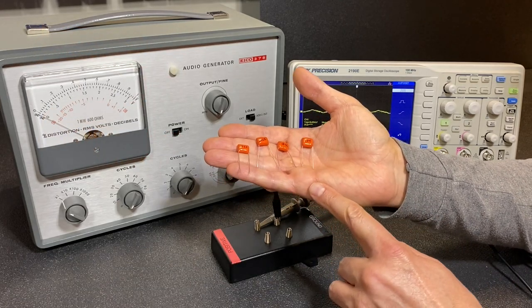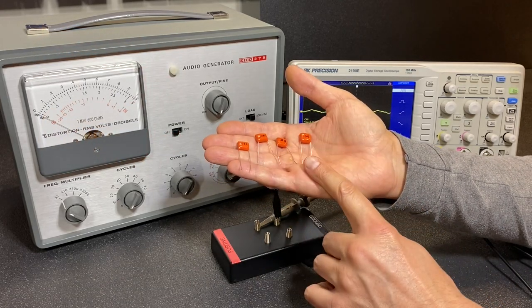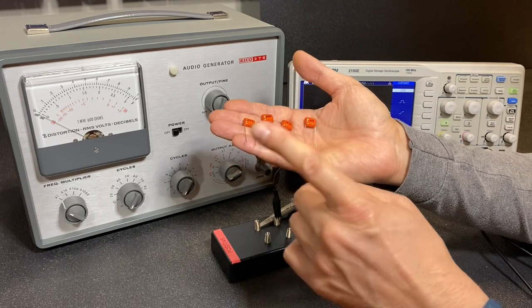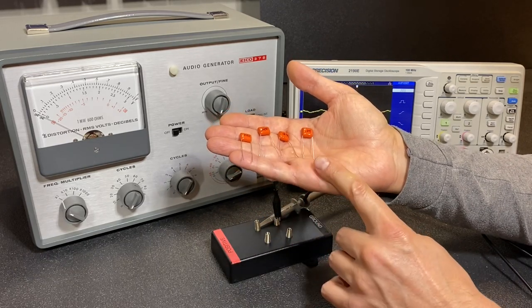Newer capacitors like these aren't marked for the outer foil, but that can be determined by doing a test on the capacitors. There are lots of ways to do this, but let me show you one method that I use.